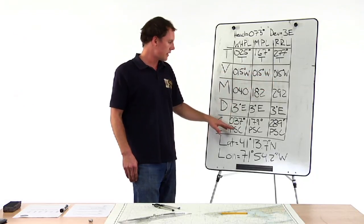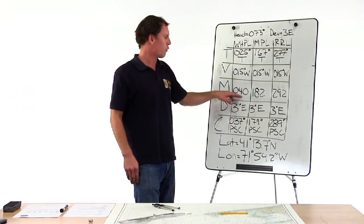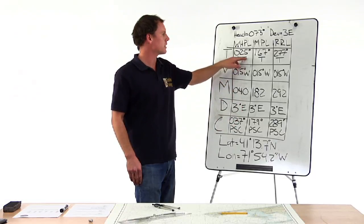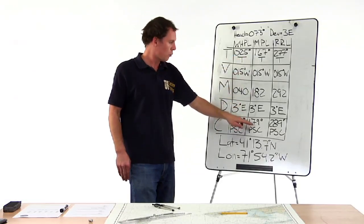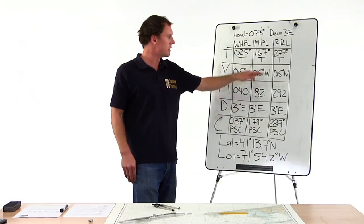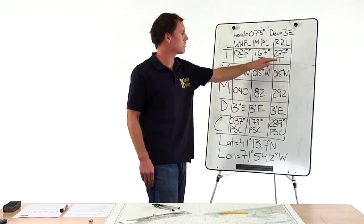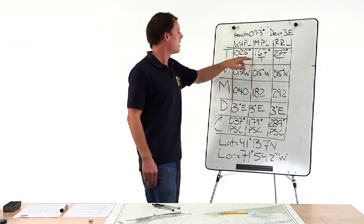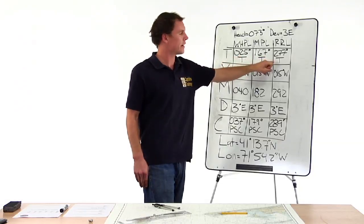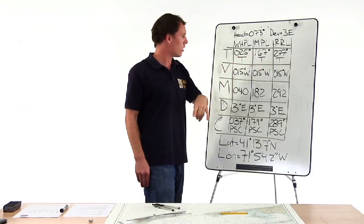So 37 PSC plus three east is 40 degrees minus 15 west is 25 true. 179 degrees PSC comes to 167 true, 289 PSC comes to 277 true. Now we can take these true bearings and plot all of them on the chart.